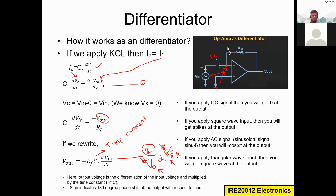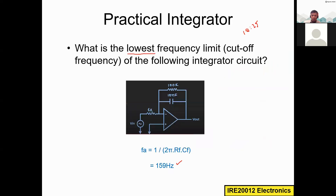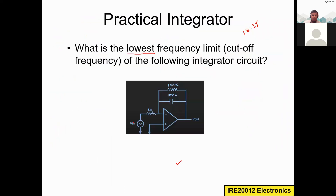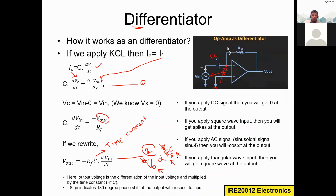The output voltage is the differentiation of the input voltage multiplied by the time constant — that is why it is called a differentiator. Compare this to the integrator, where Vout is the integration of Vin with time constant 1/RC. Here it is RC times the derivative of Vin. The minus sign indicates a 180-degree phase shift at the output with respect to the input, because the input is applied to the negative terminal.